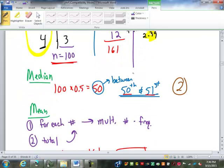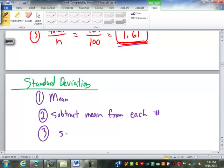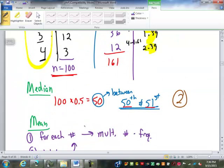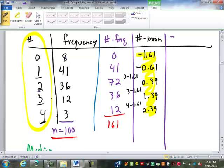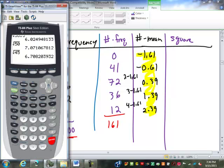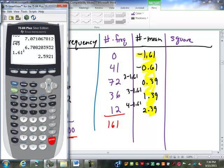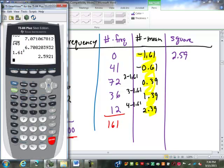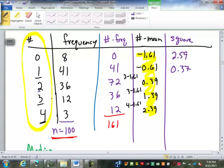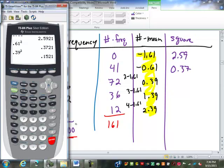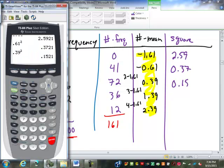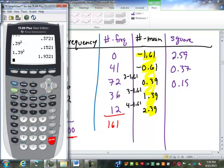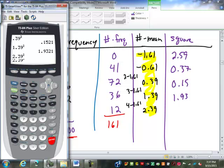Next, just like any other standard deviation, the third step, we'll do the square. So 1.61 squared or negative 1.61 squared is going to be 2.59. I'm going to round it to two decimal places. 2.59. Negative 0.61 squared is 0.37. 0.39 squared is 0.15. 1.39 squared is 1.93 and 2.39 squared is 5.71.